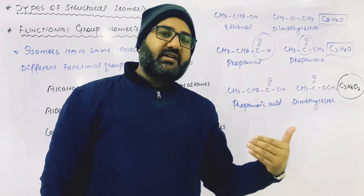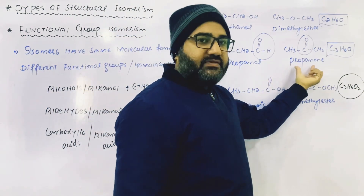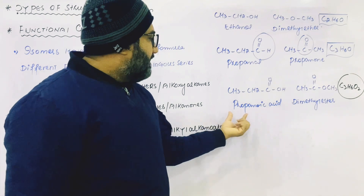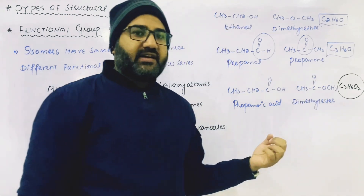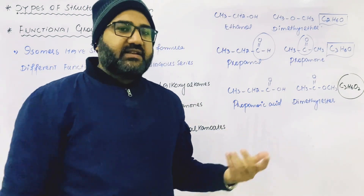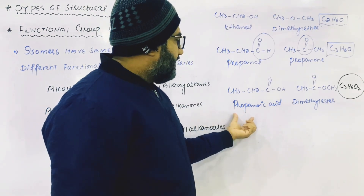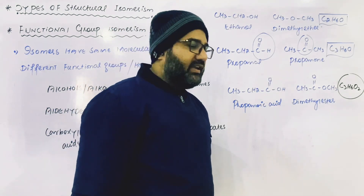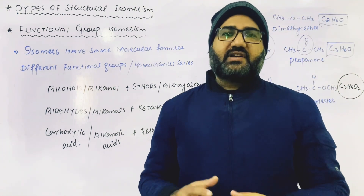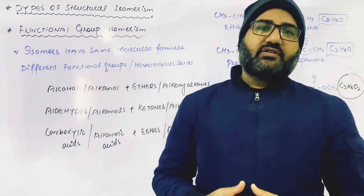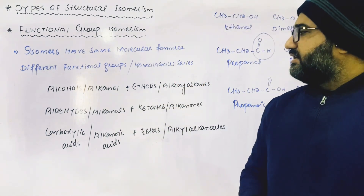That is why methanal and ethanal do not show functional group isomerism, as the smallest ketone starts from carbon number three. In the same way, esters have at least three carbon atoms, so formic acid and acetic acid will not show any functional group isomer in the case of esters. Propanoic acid is a functional group isomer of the simplest diethyl ester. There are some other classes of organic compounds which are also functional group isomers of each other, but that is not important at FSC level, class 11 and class 12. So this is all about functional group isomerism.